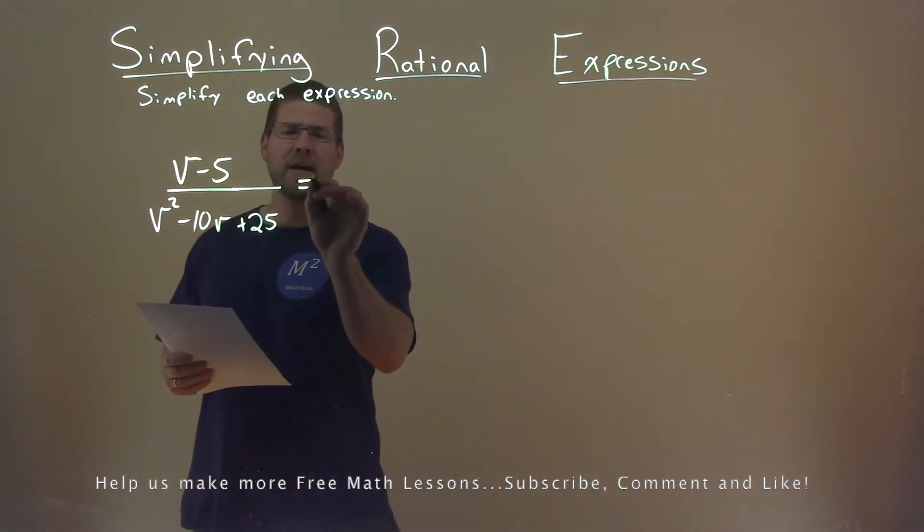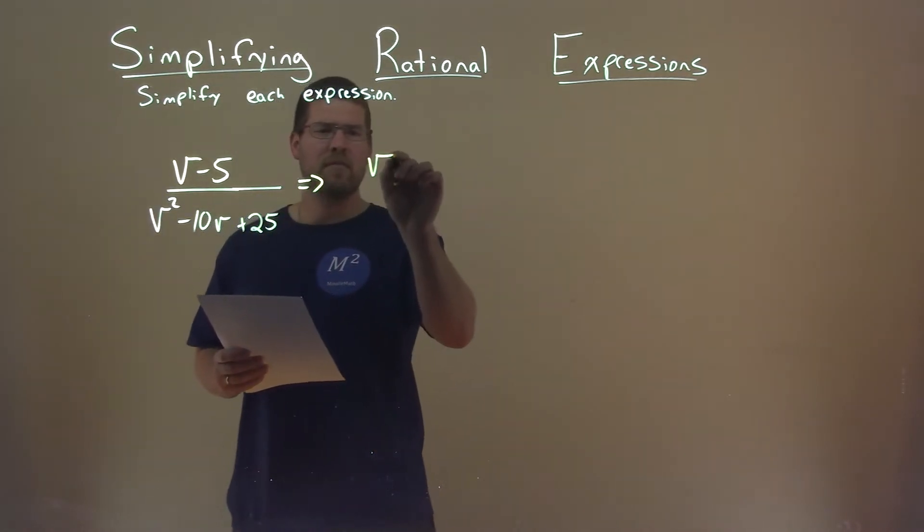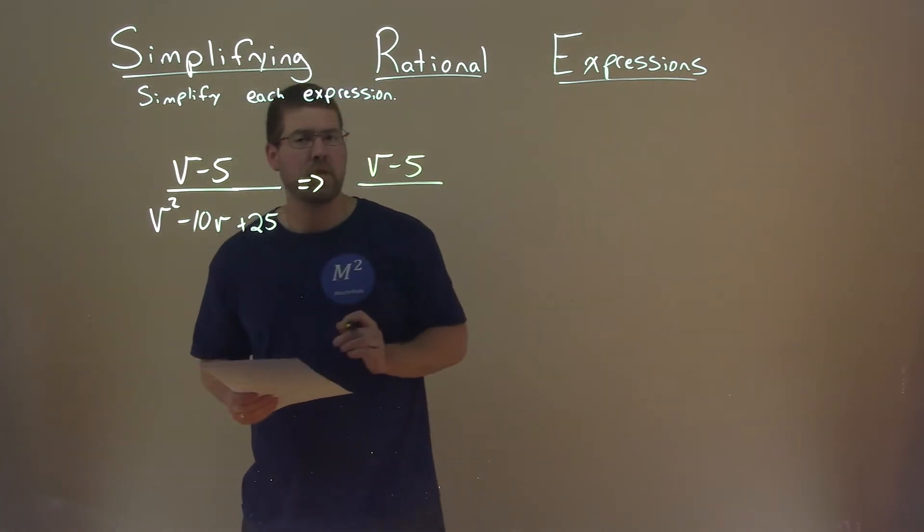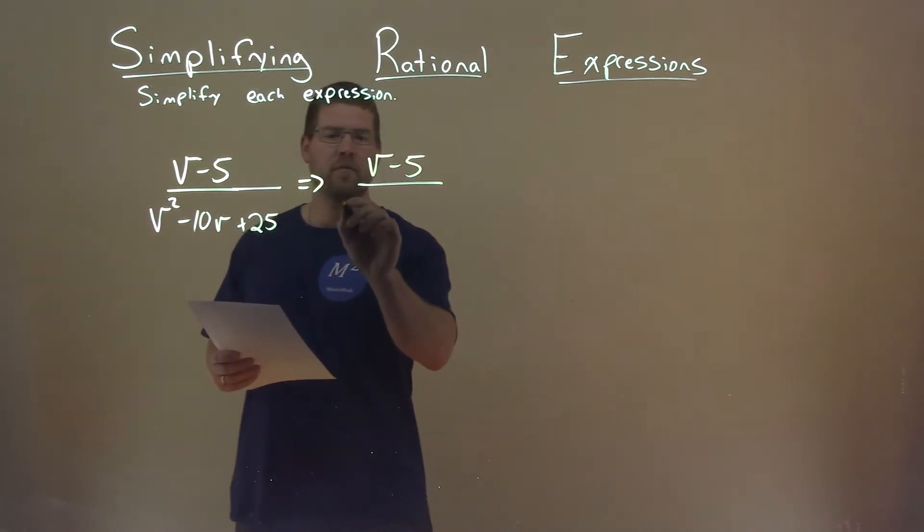Well, the numerator I can't really simplify anymore, we just have a v minus 5. The denominator, though, it seems like I can factor that fairly easily.